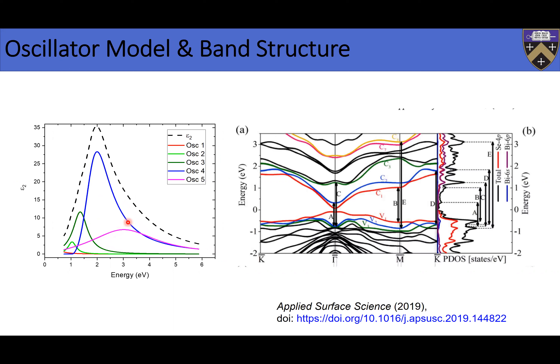I have a DFT calculation from something published in 2019. Looking at the transitions — first thing to note is that these are all electronic transitions. Phonons are not around here; phonons are at millielectron volt energies, and here we're starting at about 0.7 electron volts. Regarding the band gap: theoretically, yes, you can get the fundamental band gap, but the band gap of bismuth selenide is about 0.3 electron volts — well below our spectral range. So we cannot get that fundamental band gap transition, but all these oscillators correspond to higher-order electronic transitions.